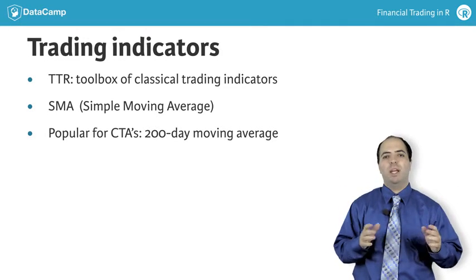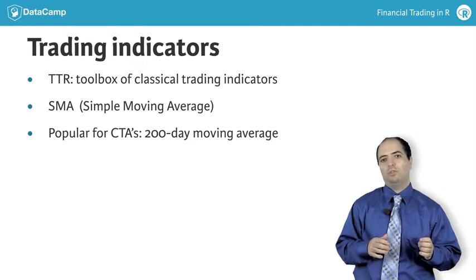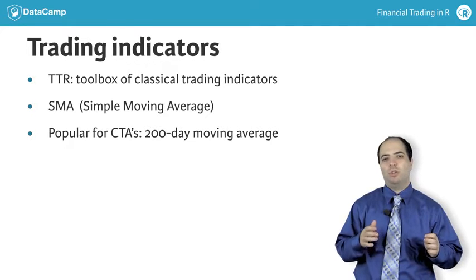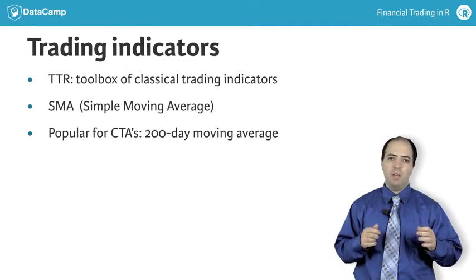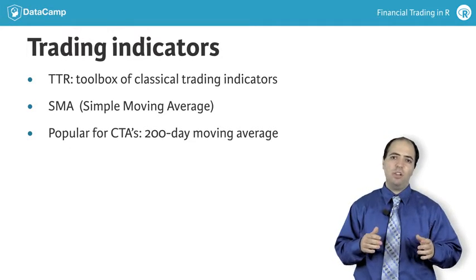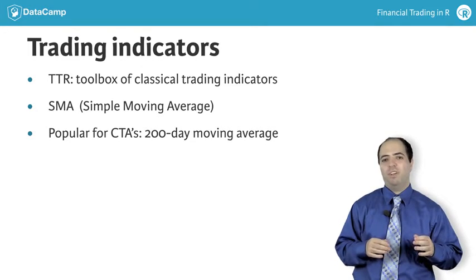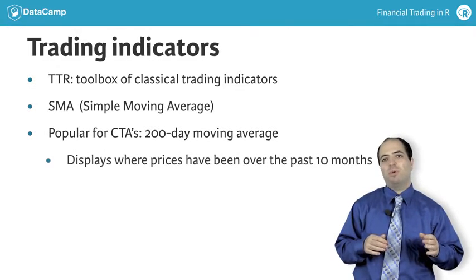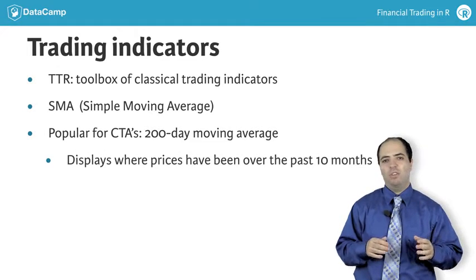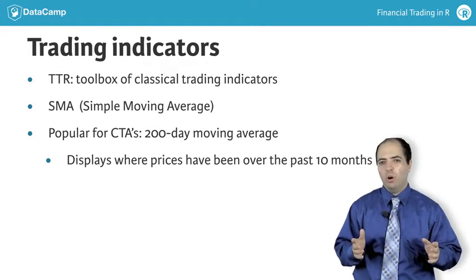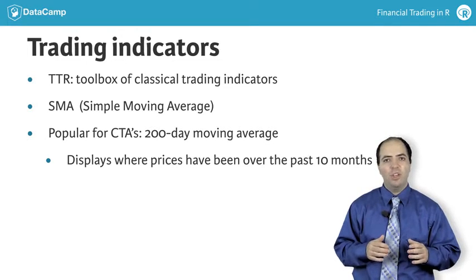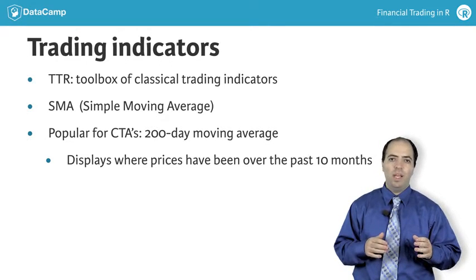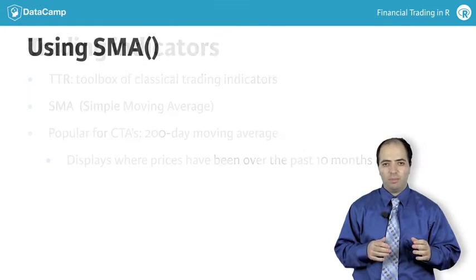Many commodity trading advisors have made a great deal trading using the 200-day moving average. Some ETFs still use this very filter to activate defensive positions. While the 200-day moving average is not a particularly magic number, it's a line that displays where the price has been over the past 10 months, as there are about 200 business days — that is, days that aren't weekends or holidays — in 10 months.